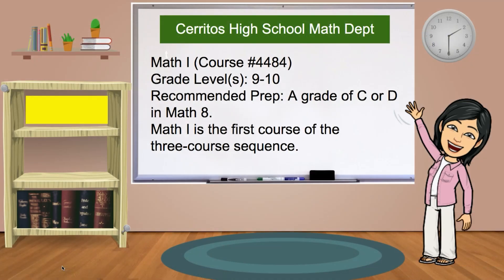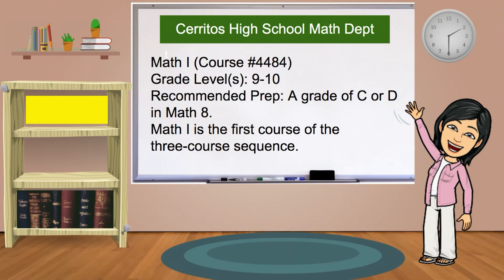Hi, welcome to Cerritos High School Math Department. This is for Mathematics 1. For Mathematics 1, the grade level is 9 or 10. Recommended preparation for this class is a grade of C or D in Math 8. Mathematics 1 is the first course of the three-course sequence, which satisfies the California Common Core standards for Integrated Mathematics 1.